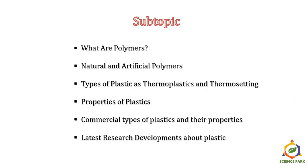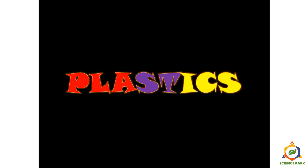Subtopics for today's video: first we'll see what are polymers, then natural and artificial polymers. We'll zoom in to plastic, one type of polymer, then see types of plastics as thermoplastic and thermosetting, properties of plastics, commercial types and their properties, and lastly the latest research developments. We are realizing the disadvantages of plastic and becoming more aware about policies on plastic bag use.